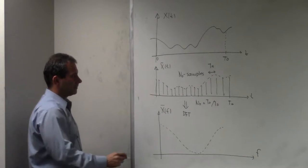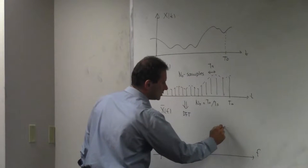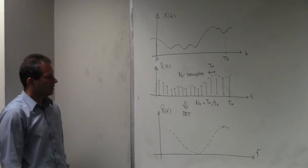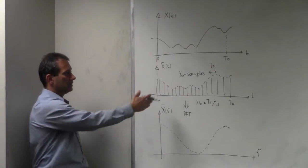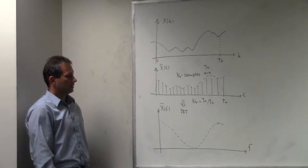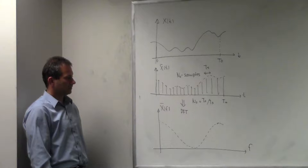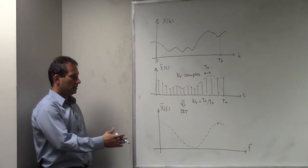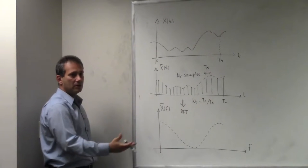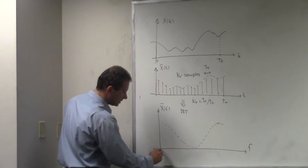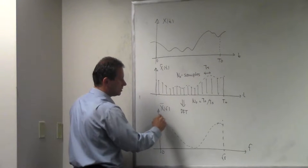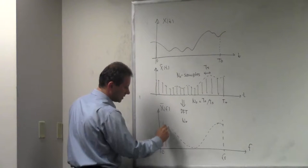Now, if the signal is real, the spectrum has to be even. Also, since this is a sampled signal, it has a periodic extension — you get the periodic nature of this signal. You can pick any period of this signal. It is customary to look at the signal between zero and Fs. So we're going to have these N0 samples in that range.